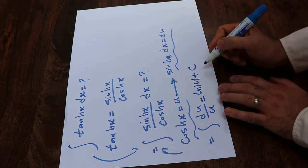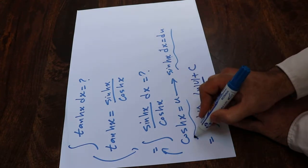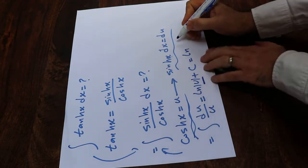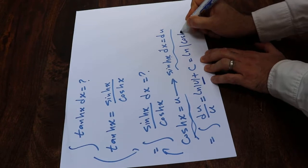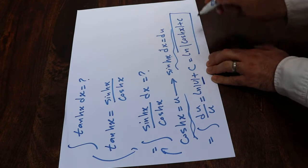Now substitute the parameter u with its definition, hyperbolic cosine x, which gives us ln of hyperbolic cosine x plus c. That's the solution to this integral.